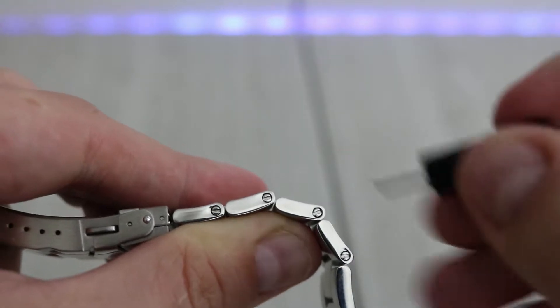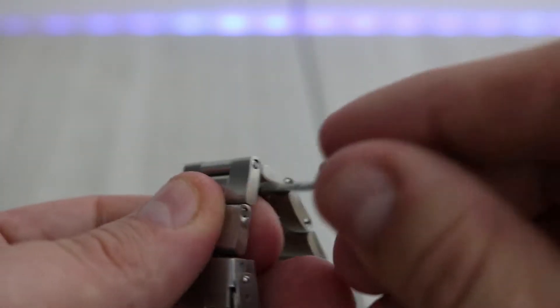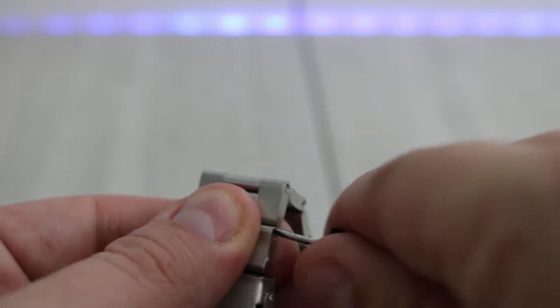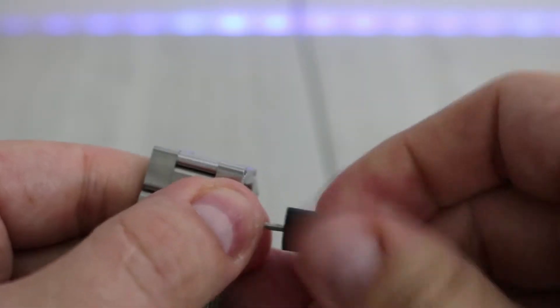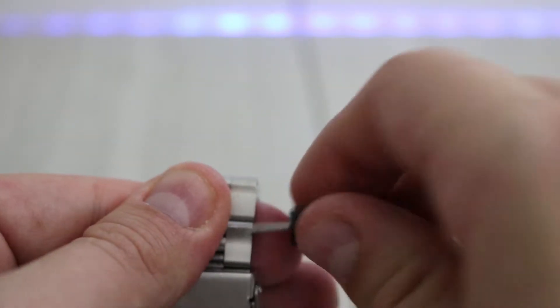And one of the things that I like about this is that they're really easy to actually change the links out. You don't actually have to have a pin press. You can just use a small screwdriver and basically just unscrew it out. Now it's a little bit tricky because it's a tiny, tiny screwdriver.